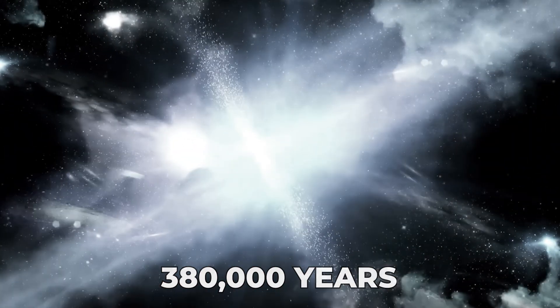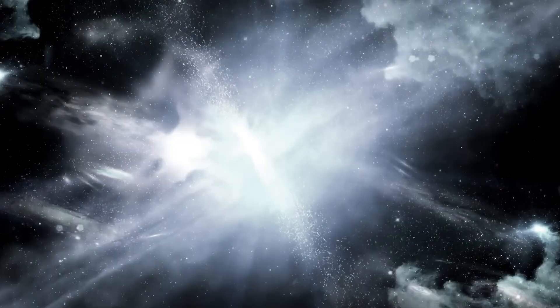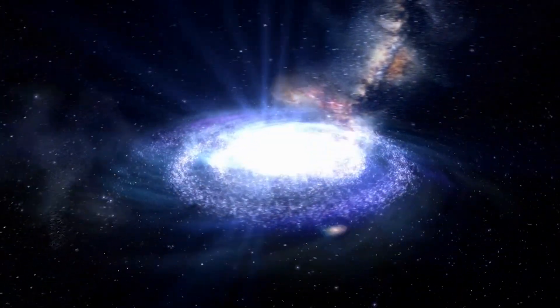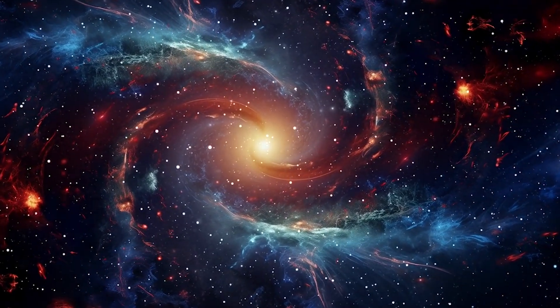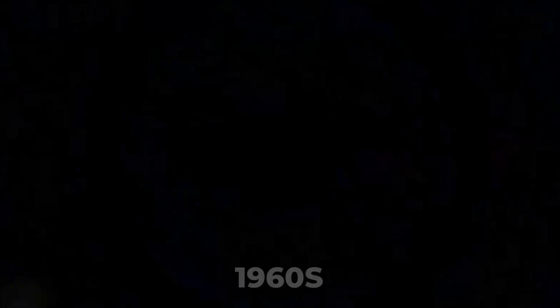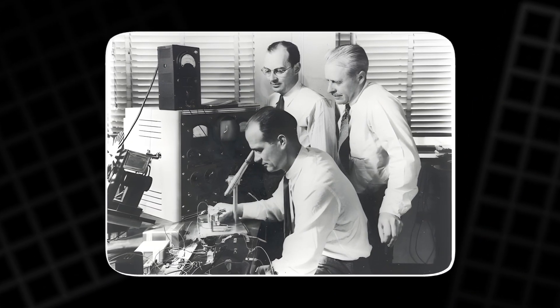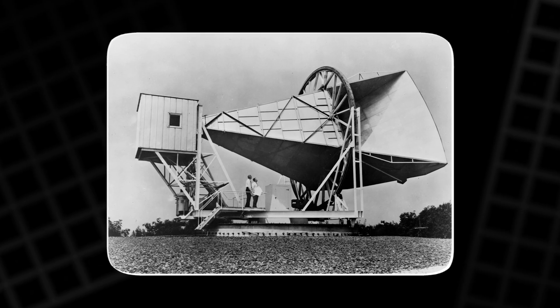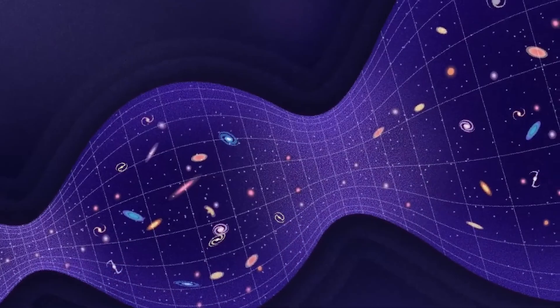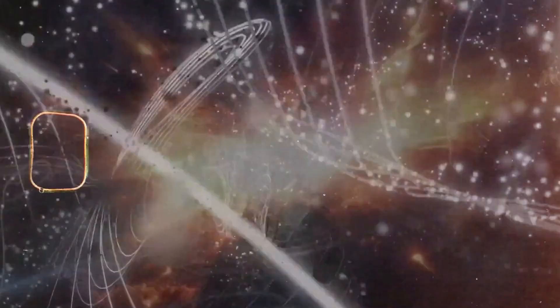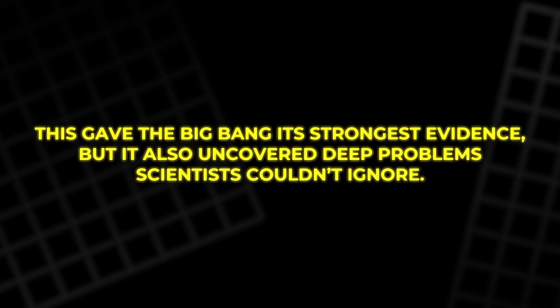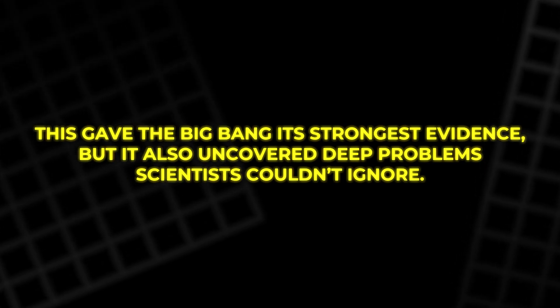Much later, around 380,000 years ago, the universe cooled enough for electrons to attach to nuclei. Light trapped for hundreds of thousands of years was finally released. That light still exists today. It is the cosmic microwave background, the afterglow of the early universe. In the 1960s, two Bell Labs scientists discovered it by accident while trying to remove a strange hiss from their radio antenna. They even cleaned out pigeon droppings, thinking that was the problem. But nothing removed the hiss.